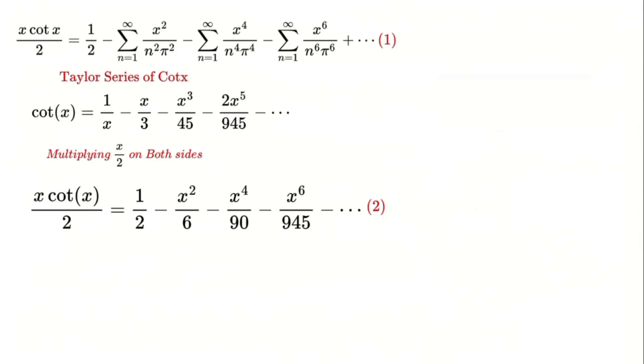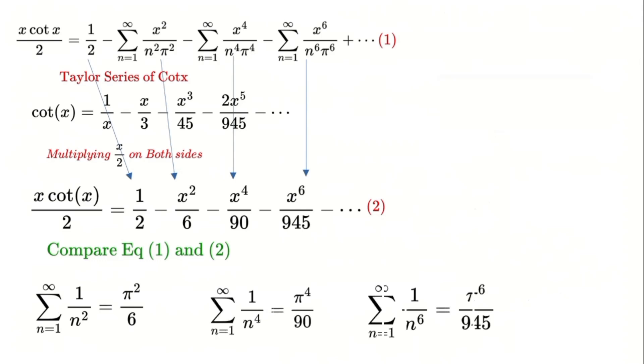Here's the magic moment. By comparing the coefficients of these two equations, we uncover the values of all even zeta functions. For example, the sum of the infinite series of squares equals pi squared over 6, which is the zeta of 2.